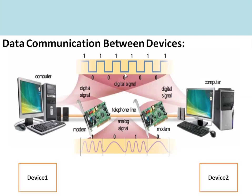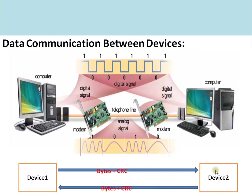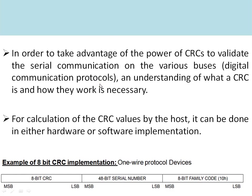Here we can see there are two devices — Device 1 and Device 2 — which are exchanging information. Device 1 sends the information and also attaches the CRC. Device 2 receives the data, calculates the CRC again for the bytes, and checks the calculated CRC against the received CRC. Whenever both CRCs match, Device 2 understands there is no error in the communication and the data is valid.